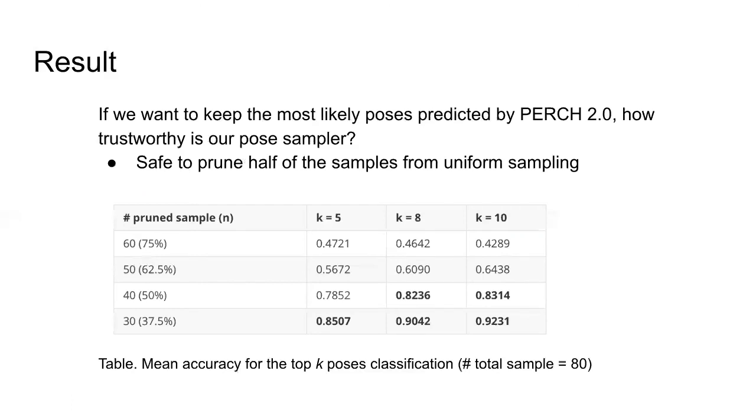We also perform experiments to answer the following question. If we want to keep the most likely poses predicted by PERCH, how trustworthy is our pose sampler? The table shows the mean accuracy for the top K poses classification. From the table, we can see when we prune half of the samples based on the predicted scores, around 80% of the most likely ground truth poses are preserved by the pose sampler.